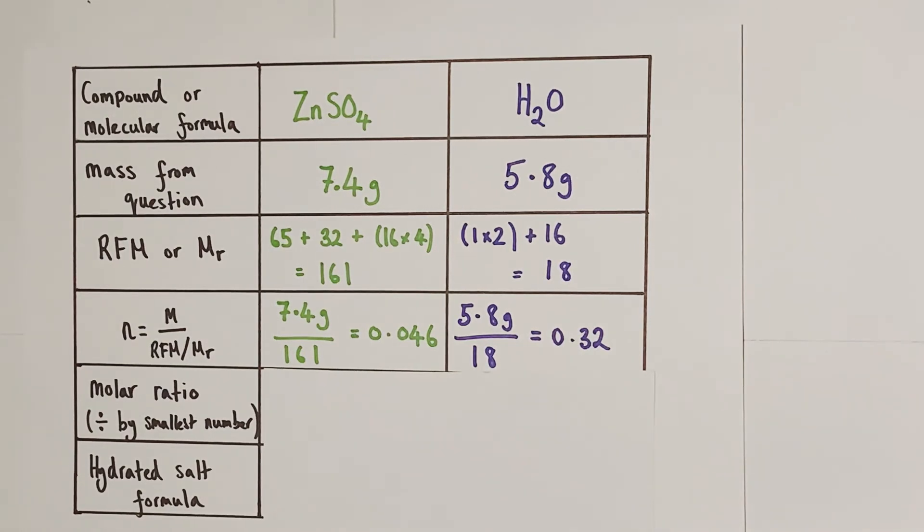So at this point we have all the information we need to determine the formula of the hydrated salt. We're going to work out something called a molar ratio. If we divide both these numbers of moles by whichever one is the smallest, we'll be comparing the two numbers against each other as a magnitude of size to find out how many times bigger the larger number is compared to the smaller number. That's what happens when you divide by the smallest and hopefully it's going to come out as a whole number and give us a very simple ratio.